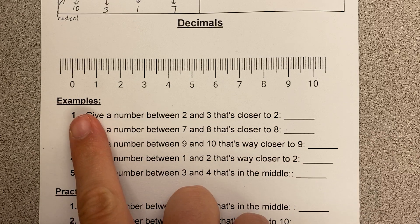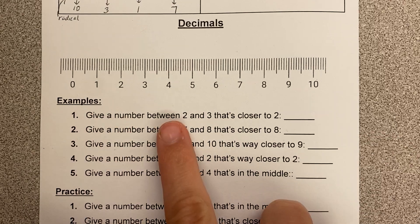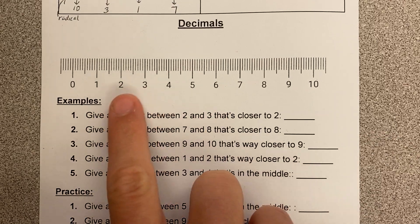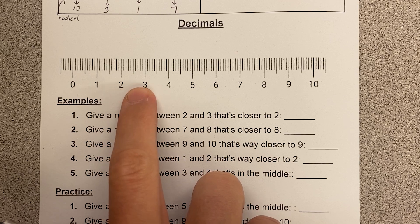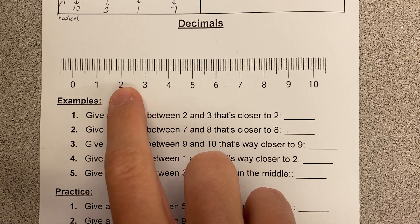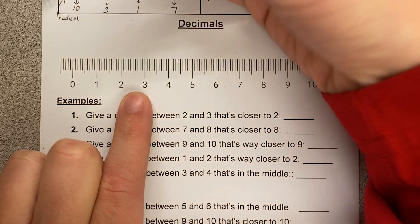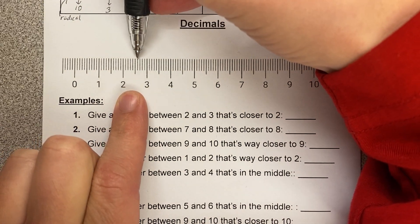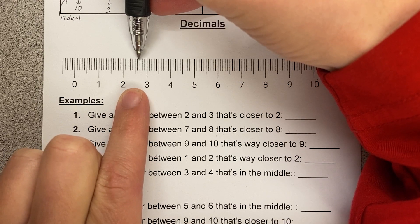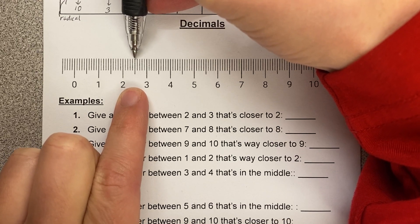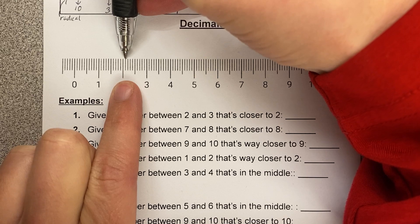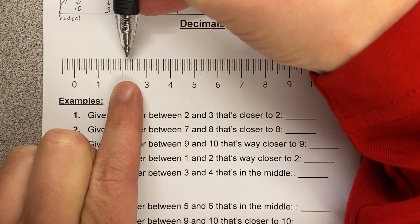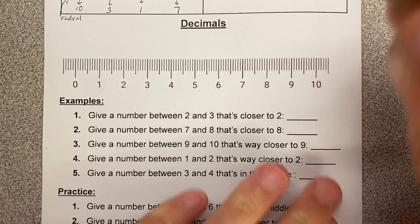So I'm going to do a few examples. If I want to give a number between 2 and 3 in between 2 and 3, that's closer to 2, what are my options? So look, in between 2 and 3, but closer to 2. Like here would be in between 2 and 3, but that one's closer to 3. This one's right in the middle, but closer to 2, these would be my options. 2.1, 2.2, 2.3, 2.4.